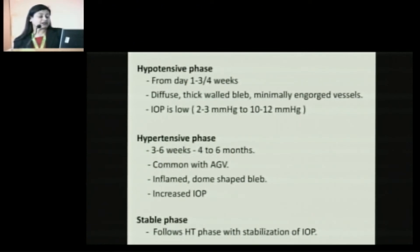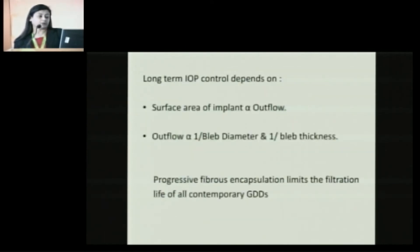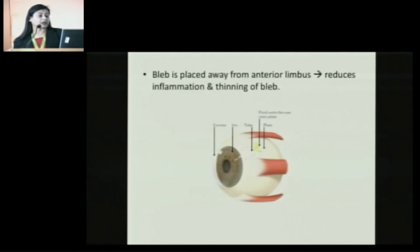After these phases are over, there follows a stable phase when the IOP gets gradually stabilized. The long-term IOP control depends upon the surface area of the implant, which is directly proportional to outflow and inversely proportional to bleb diameter and bleb thickness. The encapsulation that happens limits filtration and is a major factor controlling IOP. This bleb is much further from the anterior limbus compared to trabeculectomy blebs, so there is reduced inflammation and reduced chances of bleb thinning.